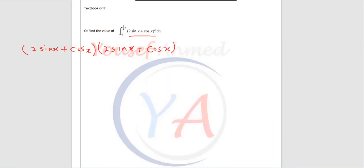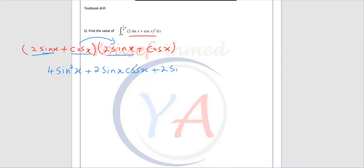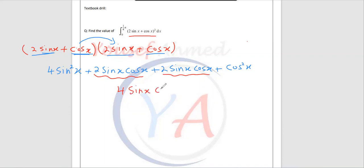Once you multiply this by this it will be 4 sin square x, and then you have 2 sin x multiplied by cos x, it will be 2 sin x cos x. And then if you multiply cos by 2 it will be 2 sin x cos x. And then if you multiply the last one, sin x by cos x, it will be cos square x. If you collect the like terms you're going to find 4 sin x cos x, and for the first one you're going to have 4 sin square.